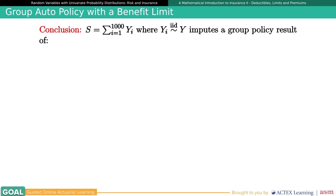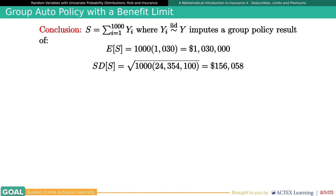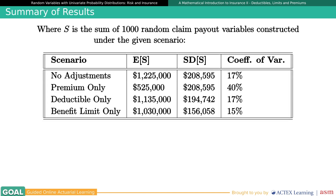Extrapolating to our group of 1,000 policies, we get an expected payout of $1,030,000 with a standard deviation of $156,058. Let's summarize the three examples and how they performed in terms of reducing total expected payout and its accompanying standard deviation. Letting S be the sum of those 1,000 independent and identically distributed payout variables, between this video and video one we have explored four scenarios. The default scenario — no premium, deductible, or benefit limit — gives a baseline total expected payout of $1,225,000 and deviation of $208,595. These are the values to beat.